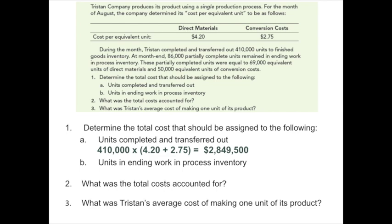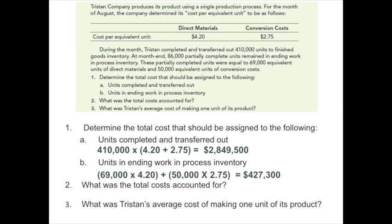To compute the total cost assigned to units in ending work in process, we have 86,000 partially completed units. Of those, 69,000 are equivalent as to direct materials and 50,000 equivalent as to conversion. We take $4.20 times 69,000 equivalent units for materials, plus $2.75 times 50,000 equivalent units for conversion, giving us a total cost of ending work in process of $427,300.